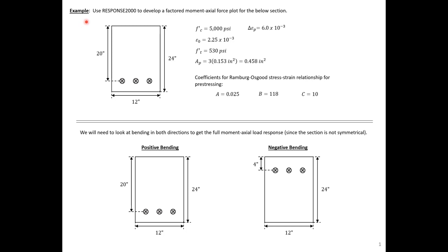In this example problem, we're going to use Response 2000 to develop a factored moment-axial force diagram for the blow section. The section is not symmetrical about the axis of bending, so we're going to need to analyze the section for both positive bending, where we have our pre-stressing strands at the bottom, and negative bending, where the pre-stressing strands are in the top of the section.